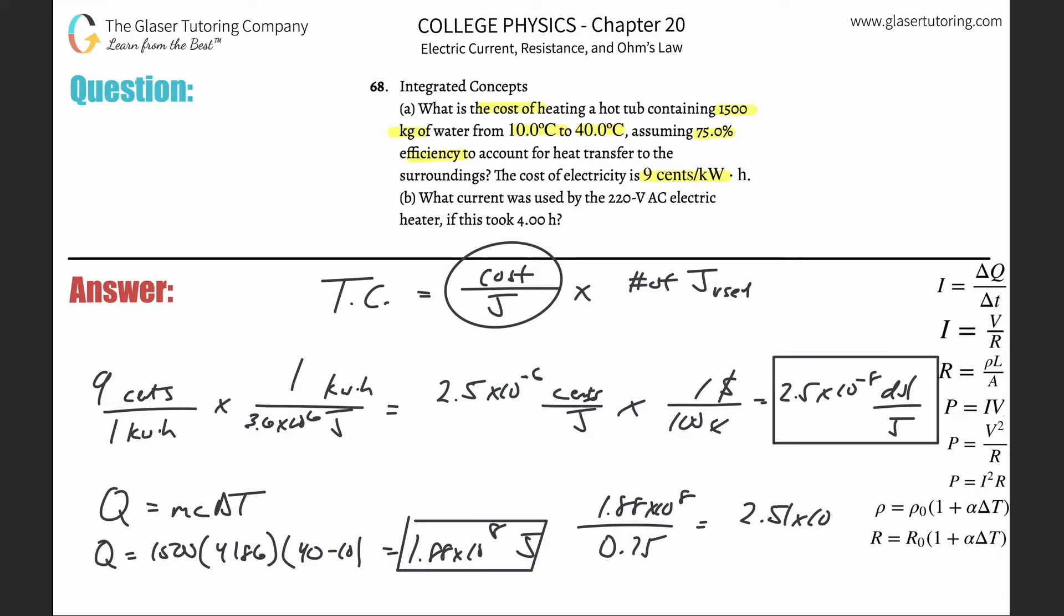Joules. So now that is indeed the actual amount of energy that's being consumed. This is the amount of energy that needs to heat the water, but the heater has to actually consume this amount because it's not a hundred percent efficient. Hopefully that makes sense.